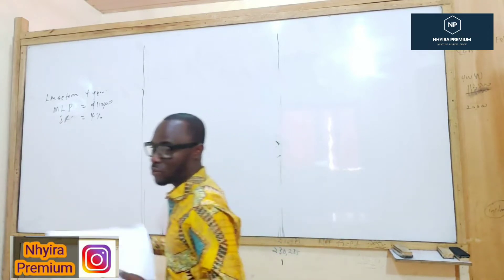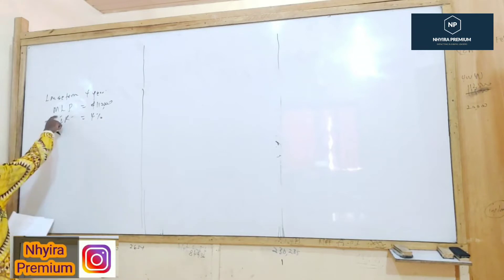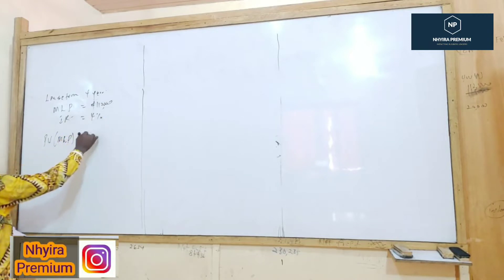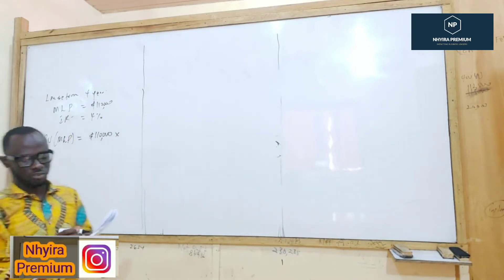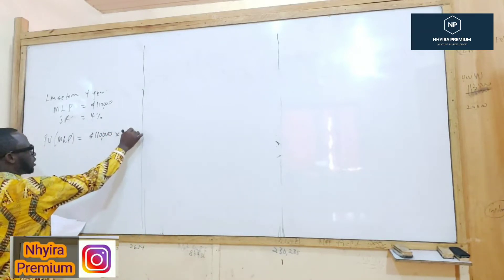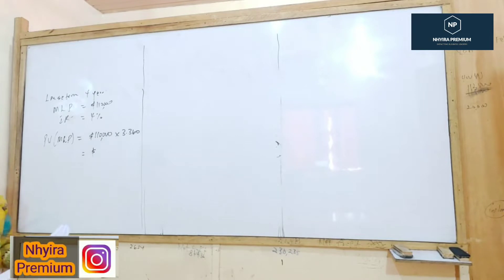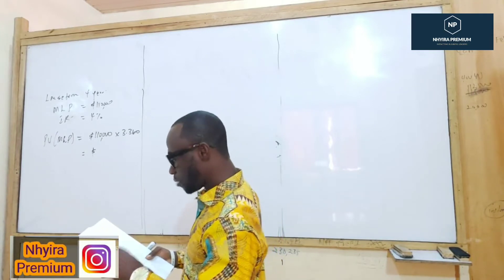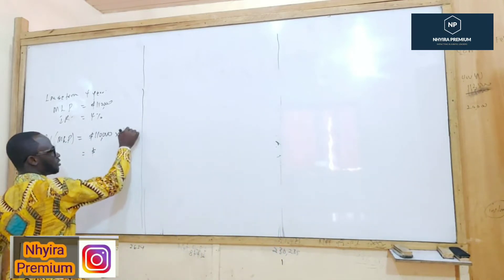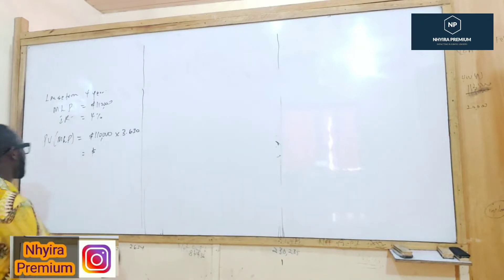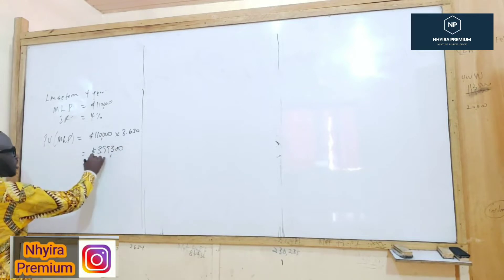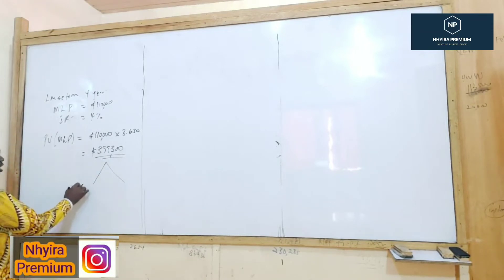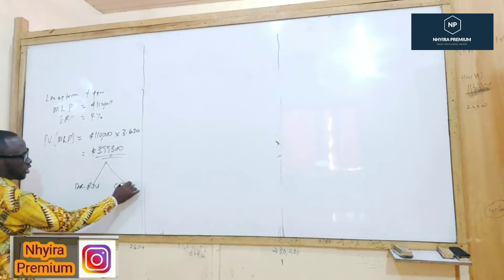So what do we do for initial recognition? We calculate the present value of the minimum lease payments. The present value of the minimum lease payments is going to be £110,000 times the annuity factor of 3.636, which gives us £399,300 — approximately £399,399. So for this, we would debit the right-of-use asset and credit the lease liability. That's the initial recognition.